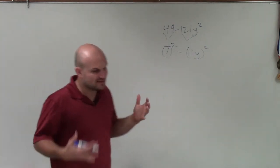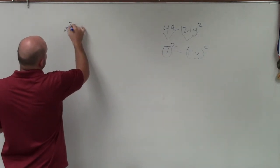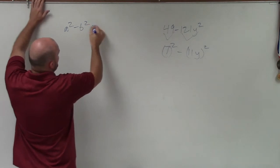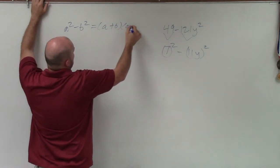Now, what was the whole point of this? What was the whole point of writing something as its squared terms? Well, remember, the difference of two squares states, if you have a squared term subtracted by another squared term, then you can write that as a plus b times a minus b.